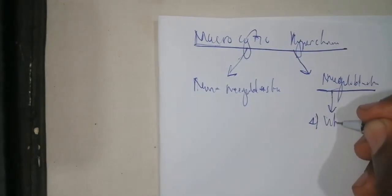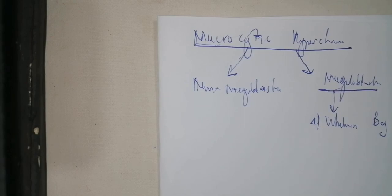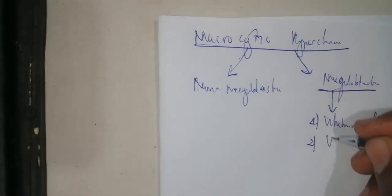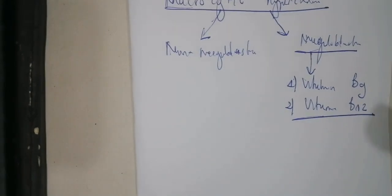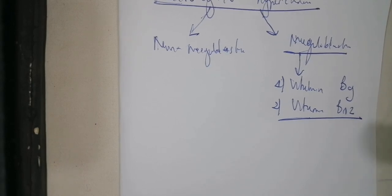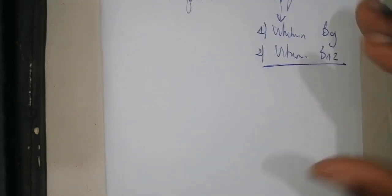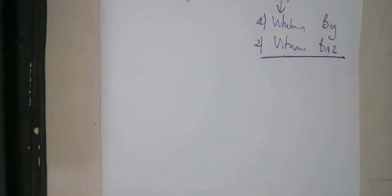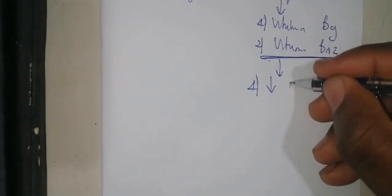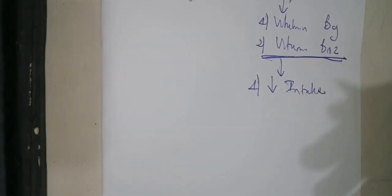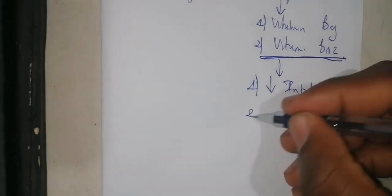Megaloblastic anemia is generally a result of either vitamin B9 deficiency — also called folic acid — or vitamin B12 deficiency, also called cobalamin in its active form. The deficiency can arise from multiple reasons, including reduced intake of vitamin B9 or B12. Vitamin B9 does not have a special absorption system, so it is easily absorbed at the intestinal level, but vitamin B12 has a special absorption system.